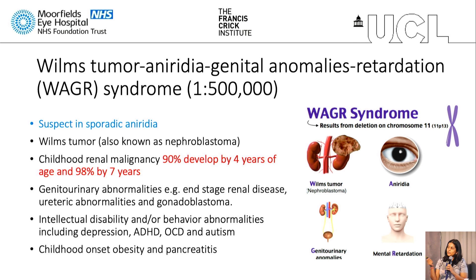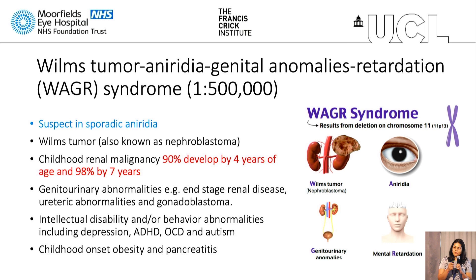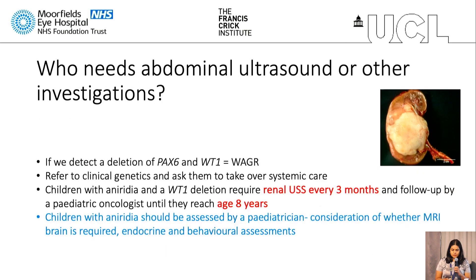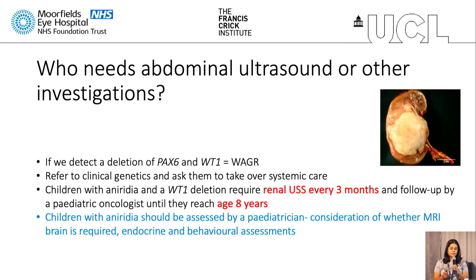The question is how much of this is now down to the PAX6 mutation. We know the WT1 mutation definitely contributes to the Wilms Tumor, but maybe there is some crossover effect. If we detect a deletion involving PAX6 and WT1 and confirm WAGR syndrome, those children will need a renal ultrasound every three months and should be referred to a paediatric oncologist. At least in the UK, we would refer children to clinical genetics to take over their systemic care, while they continue with ophthalmology for their eye care.